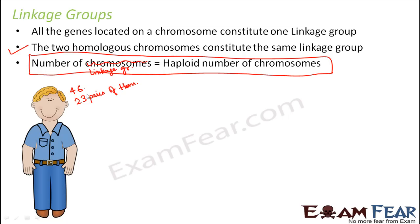So how many linkage groups do we have? We will have 23 linkage groups, because both chromosomes in a homologous pair are under one linkage group. Basically, the number of pairs of homologous chromosomes — the haploid number, which is half the total number of chromosomes — equals the number of linkage groups.